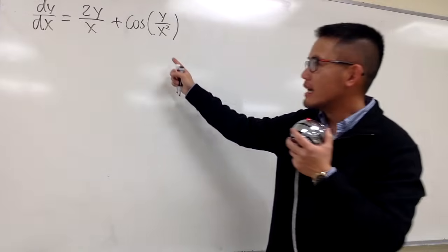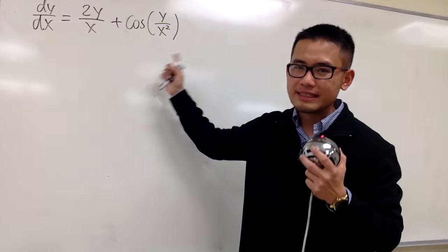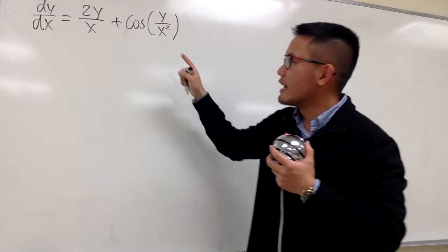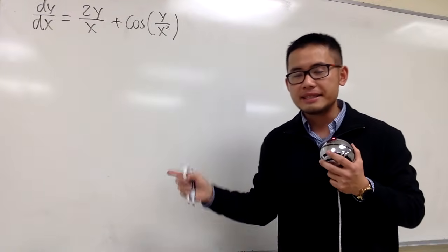Okay, let's solve this differential equation. As we can see, this is certainly not separable, and this is also not linear because the y is inside of the cosine. And this is also not exact.